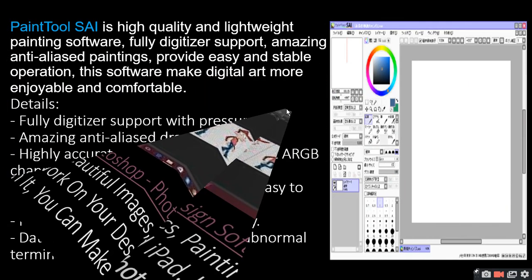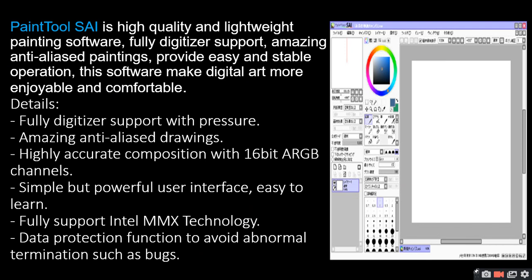Paint Tool SAI is a high quality light-weight painting software. It offers fully digitizer support, amazing anti-aliased painting, and provides easy and stable operation. This software makes digital art more enjoyable and comfortable. Features include fully digitizer support with pressure, amazing anti-aliased drawing, highly accurate composition with 16-bit ARGB channel, simple but powerful user interface, easy to learn, full Intel MMX technology support, and data protection function to avoid abnormal termination such as bugs.